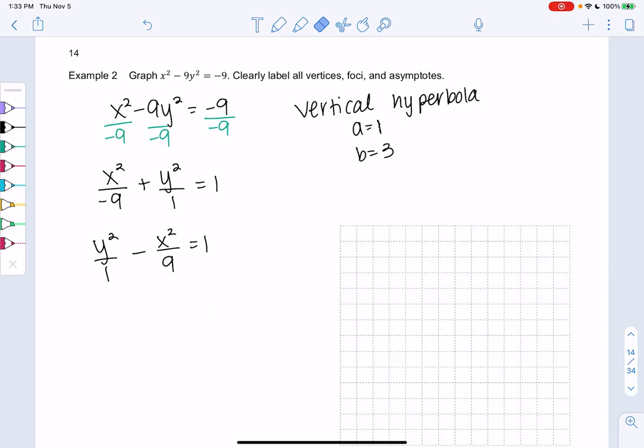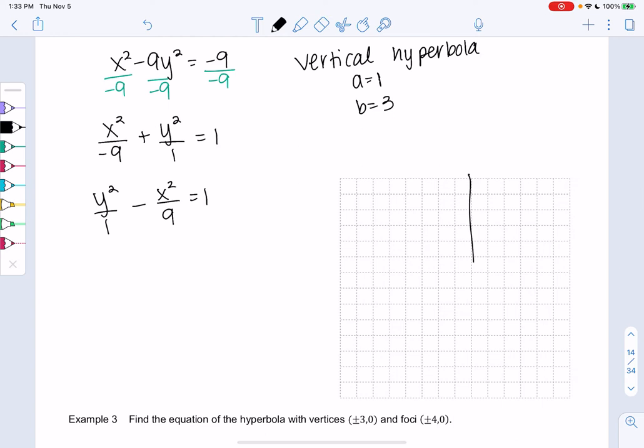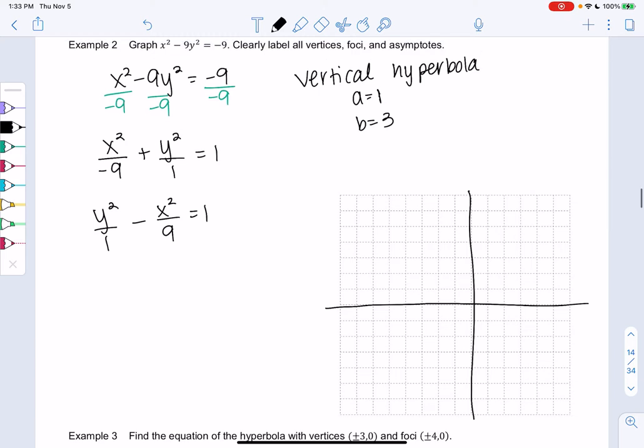So the vertices are at a. Since it's horizontal, the vertices will be on the horizontal axis. Or sorry, since it's vertical, the vertices will be on the vertical axis. Sorry, I'm saying vertical and horizontal so much. But it'll be up and down for vertical. So it'll go this way and this way.